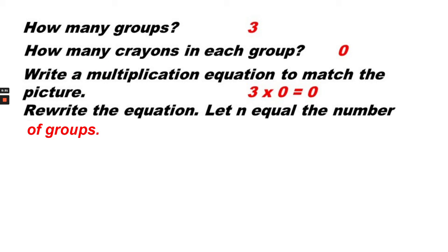Let's rewrite this equation, letting n equal the number of groups. So there are three groups. So we can say n times 0 equals 0.